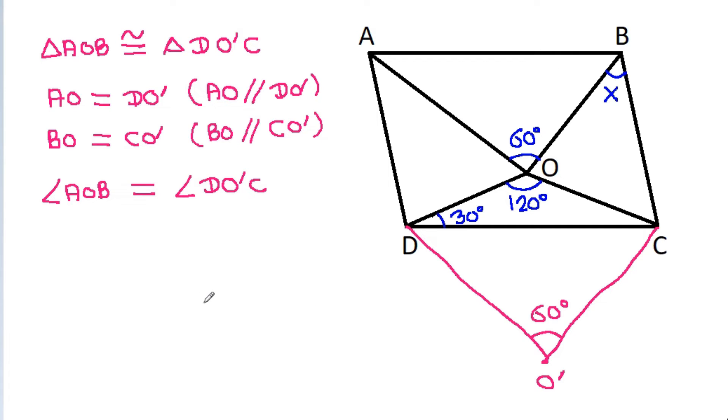And in any quadrilateral, if this angle is alpha and this angle is beta and if alpha plus beta is equal to 180 degrees, then the quadrilateral is cyclic.